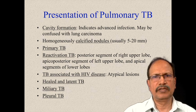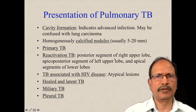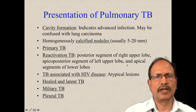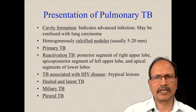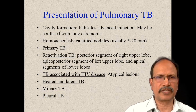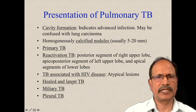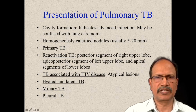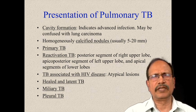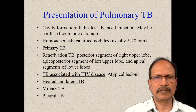Reactivation tuberculosis usually involves the apico-posterior segment of the right upper lobe, apico-posterior segment of the left upper lobe, and apical segments of lower lobes. TB associated with HIV disease is atypical and chest X-ray may not reveal any signs of infection. There are other varieties like healed and latent tuberculosis. In healed tuberculosis you may see leftover cavities, and in latent tuberculosis there may not be any sign, but the bacilli will be lurking, waiting for host immunity to drop to cause activated tuberculosis.